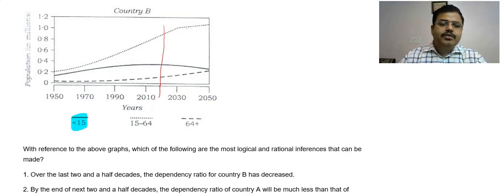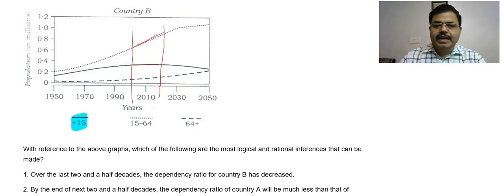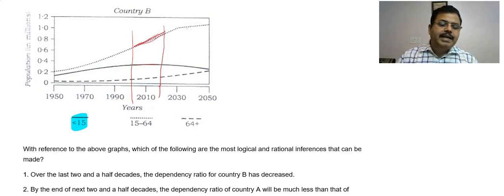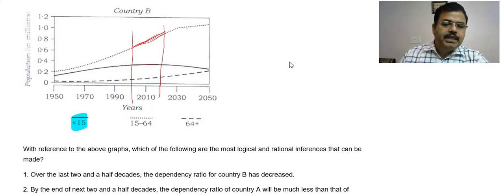Presently this is around 2018, so last two and a half decades means 25 years back. In this period, the number of earning people — the workforce — is going to increase, while dependents, that is people more than 64 years old and less than 15 years of age, are the dependents. Because working people are going to increase so much, the dependency ratio will decrease.